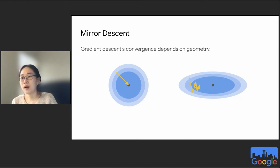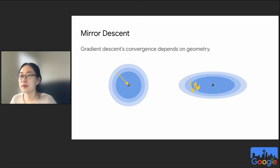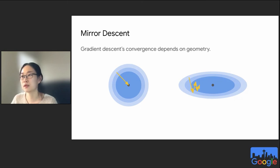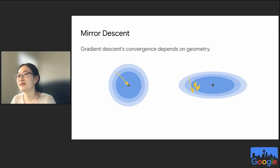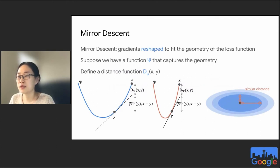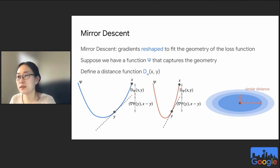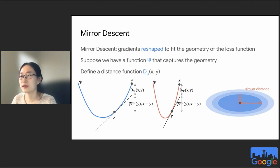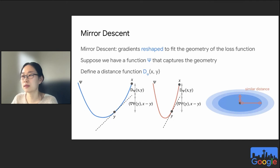The algorithm we consider is mirror descent. In standard gradient descent, the same algorithm applied to two problems with different geometries will converge directly on the isotropic case but bounce around on the anisotropic case. People created mirror descent to reshape the gradient so the anisotropic case becomes easier. Suppose we have a function psi that captures the optimization geometry. We can define a distance function such that points x and y that have different distances under the usual metric in these two functions will have the same distance under this new metric, making the non-isotropic problem look isotropic and converge faster.